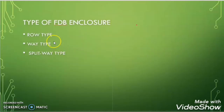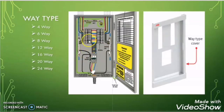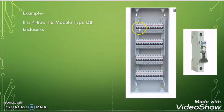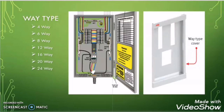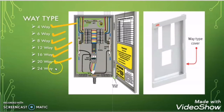Now let us discuss about the second type of FDB enclosure — the way type FDB enclosure. In way type FDB enclosure, the breakers are arranged inside the panel in a vertical pattern. The way type breaker can be of 4 way, 6 way, 8 way, 12 way, 16 way, 20 way, or 24 way type.